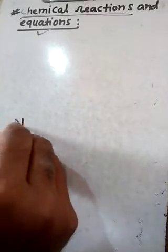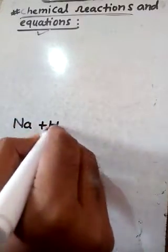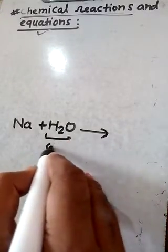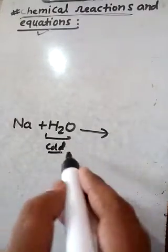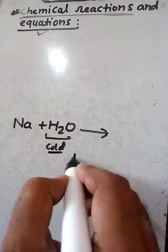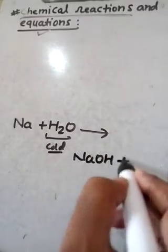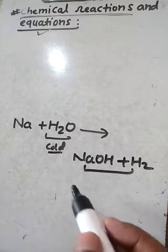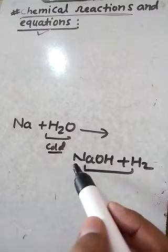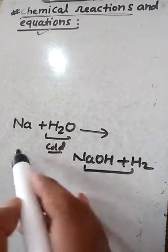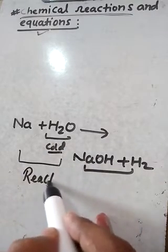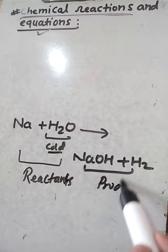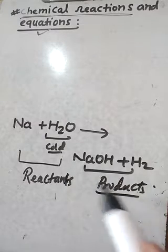When we add sodium in water, sodium reacts with water — cold water — to form sodium hydroxide and hydrogen gas. In this reaction, sodium and water are called reactants, and sodium hydroxide and hydrogen gas are called products.